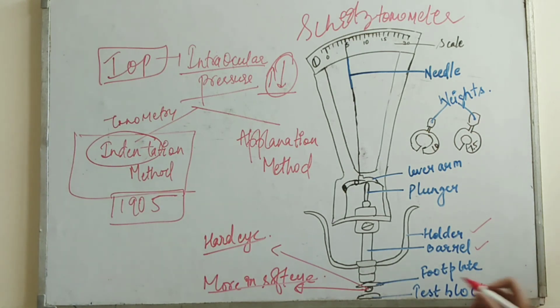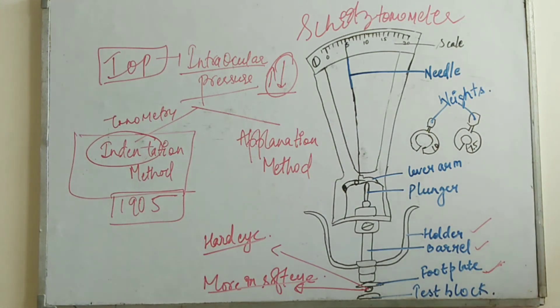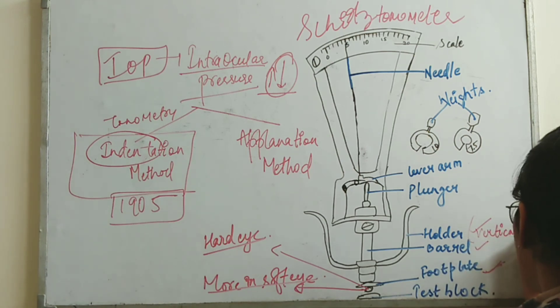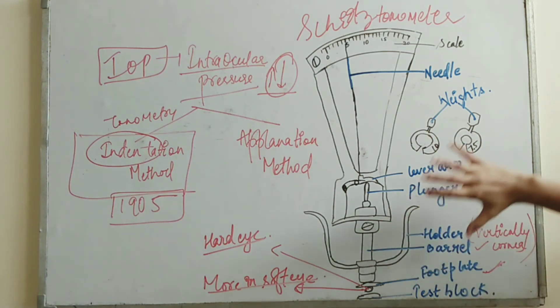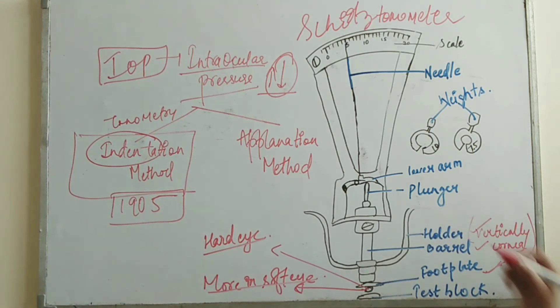The Schiotz tonometer has a foot plate also. That foot plate is being indented on the cornea, and this holder is positioned vertically on the cornea. We need to learn that we have to put the holder in the vertical position on the cornea.